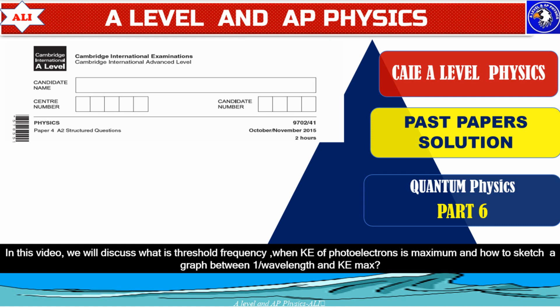In this lesson, I will explain what threshold frequency is, when the kinetic energy of photoelectrons is maximum, and how to sketch a graph between maximum kinetic energy and one over wavelength.